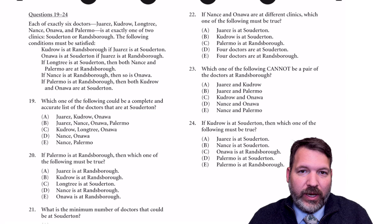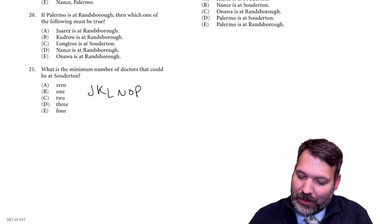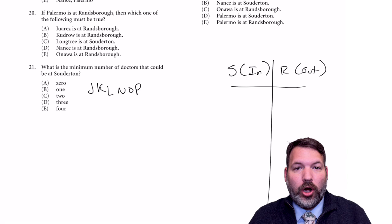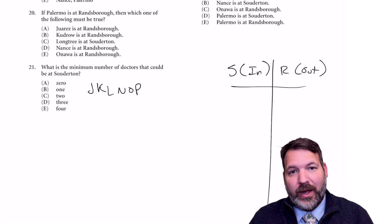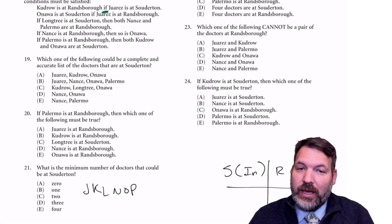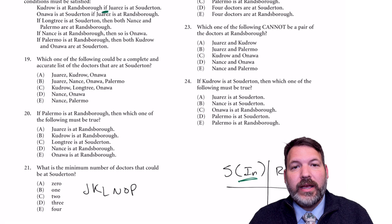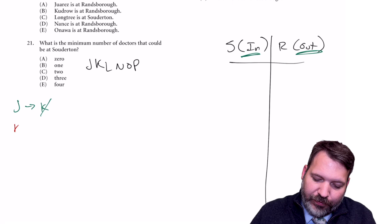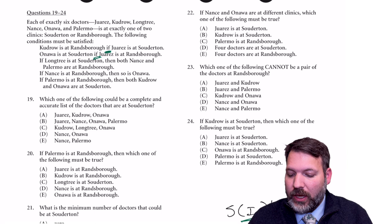Now let's apply this to prep test 34, game 4. I'll set up the diagram using S for the inside (Souderton) and R for the outside (Randsboro), with positive symbols on the left and negative on the right. First clue: 'K is at R if J is at S' — reading the if-part first: if J is in, K is out. Contrapositive: if K is in, J is out.